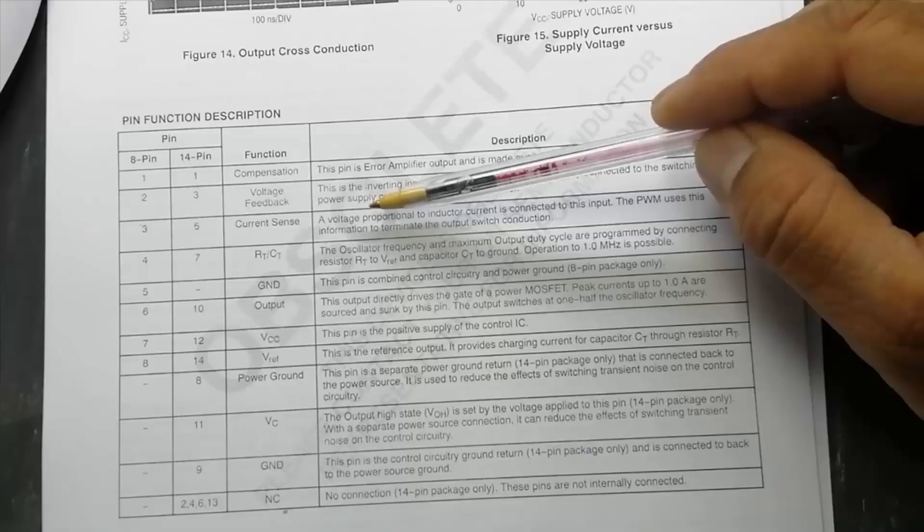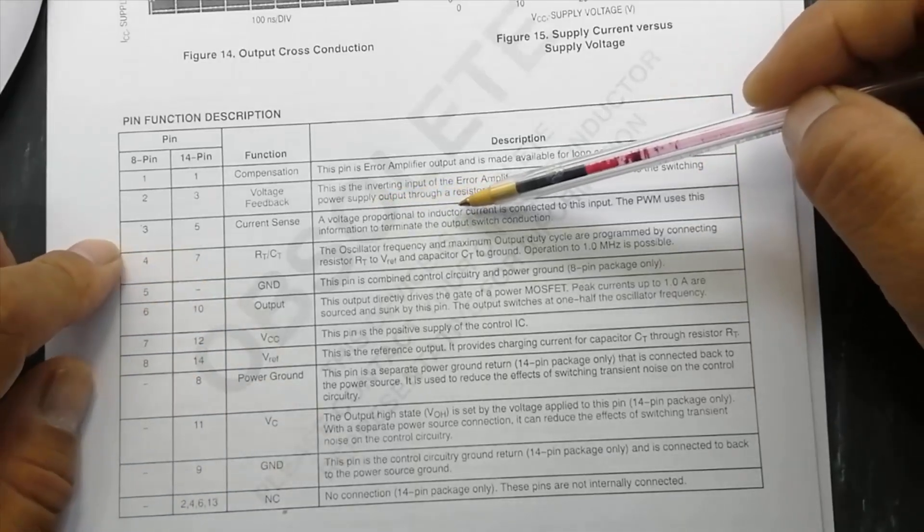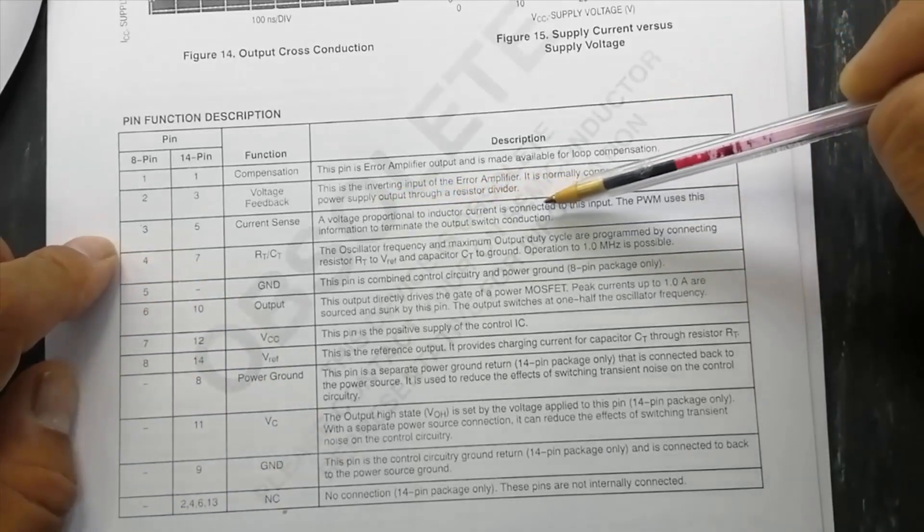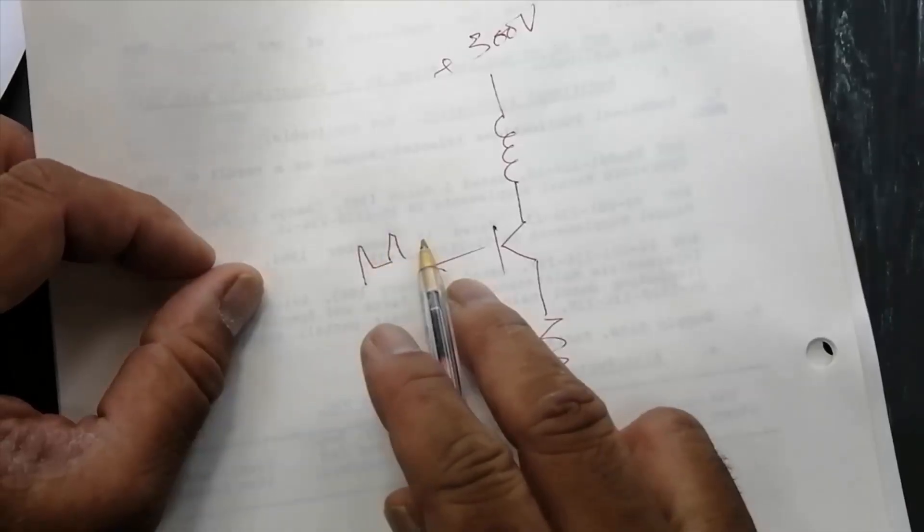This is normally connected to switching power supply output through a resistor divider. Then we have current sense. A voltage proportional to inductor current is connected to this input.